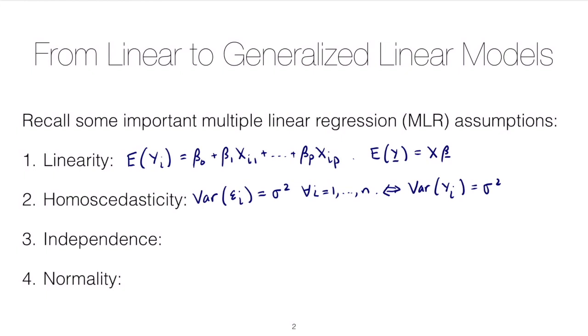All right, so we also impose an independence assumption. So that means either error terms or measurements of the response are independent. And so independence implies zero correlation and zero covariance. So one way that we could write this, perhaps not as strong as independence, but capturing the same idea is that the covariance between two different error terms is equal to zero. And so when I say two different error terms here, I mean that this is true for all i is not equal to j.